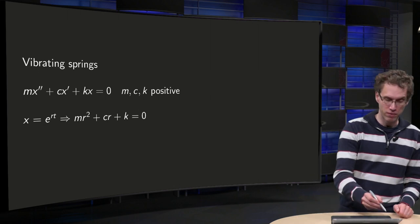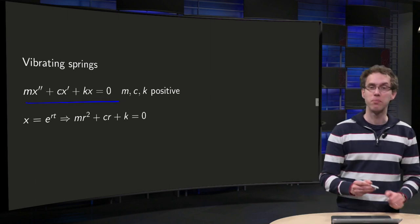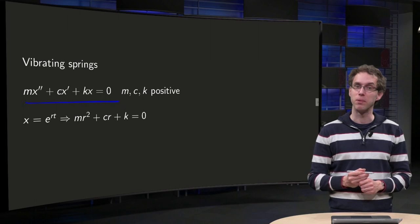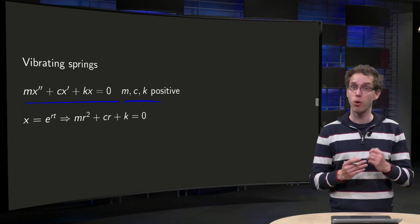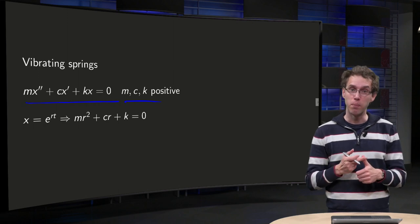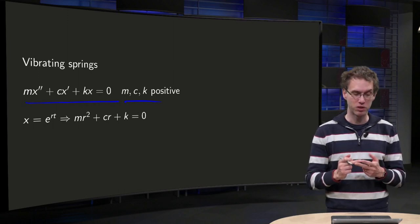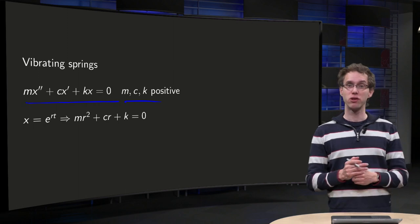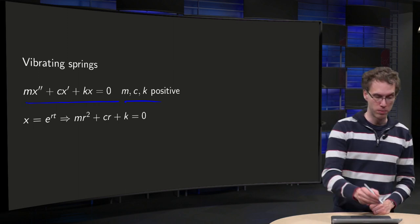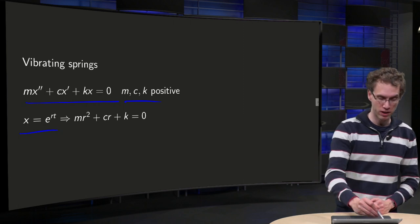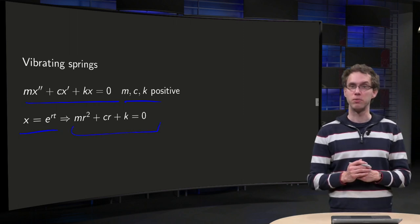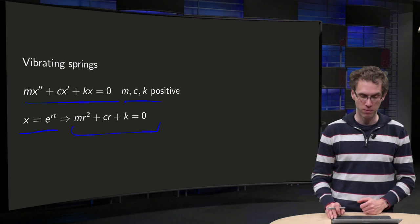We have already seen that we can model it as m times x double prime plus c times x prime plus k times x equals zero, where m, c and k are all positive constants: mass, constant of friction and spring constant. You know how to solve a problem like this, you plug in the answer x equals e to the power rt, which gives you the characteristic equation m r squared plus c times r plus k equals zero.